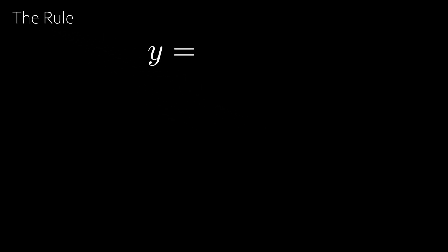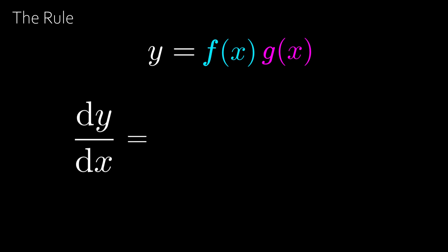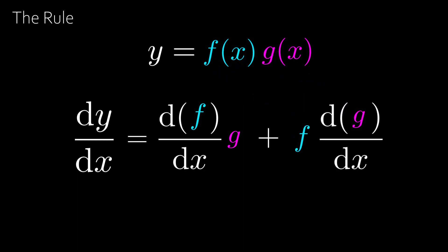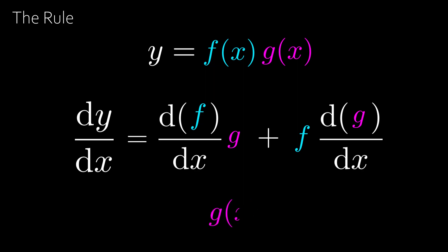The rule: if y is equal to some function multiplied by another function, then the product rule states that dy/dx is equal to the derivative of the first function multiplied by the second function, plus the first function multiplied by the derivative of the second function. We use f and g because f(x) can be shortened to f and g(x) can be shortened to g.